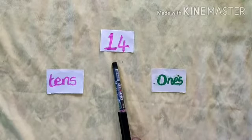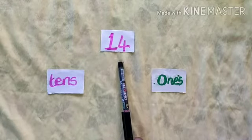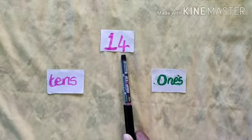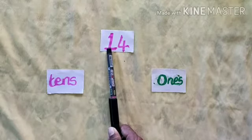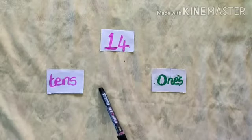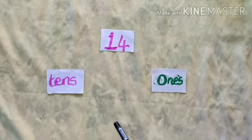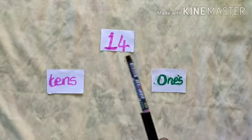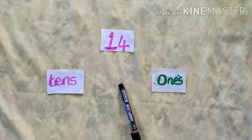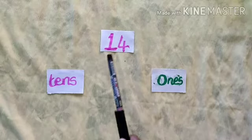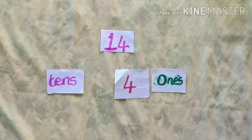Read this number — number 14. This place is called 1's place and this place is called 10's place. Now you can say how many 1's are here — 4 ones here.